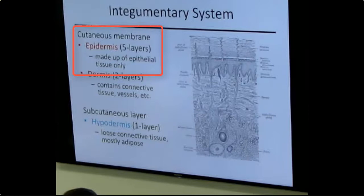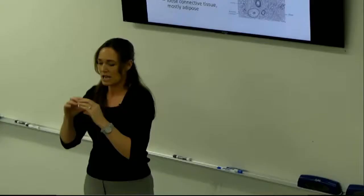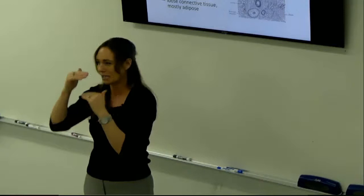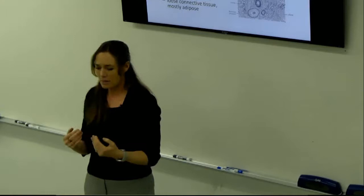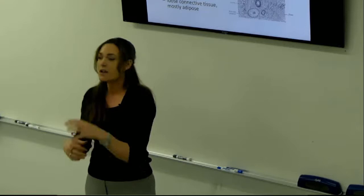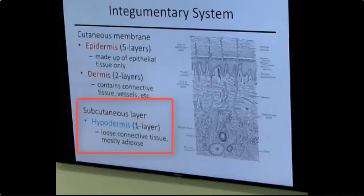The skin is known as the cutaneous membrane, made up of the epidermis on top and the dermis — the true skin — below. Those are the two components. The dermis is actually thicker. There are only two big layers, but we'll also learn about five tiny layers that make up just the epidermis. The epidermis is all epithelial tissue, so it's avascular — if you scratch without drawing blood, you're only in the epidermis.